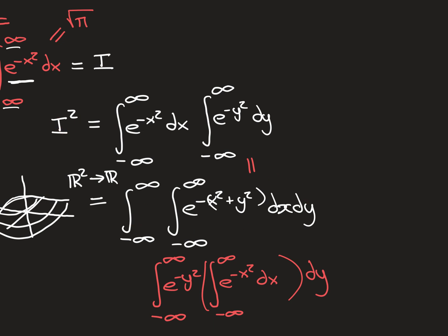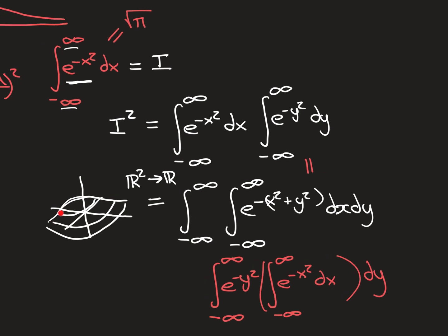This looks even worse — we've gone from a one-dimensional to a two-dimensional integral — but it's actually better because we can now change to polar coordinates. The function e^(-(x²+y²)) becomes e^(-r²), since x²+y² = r², and because it's radially symmetric it has no dependence on theta.